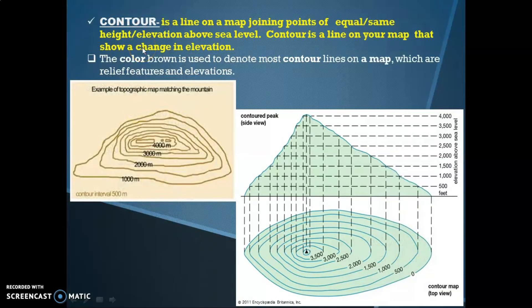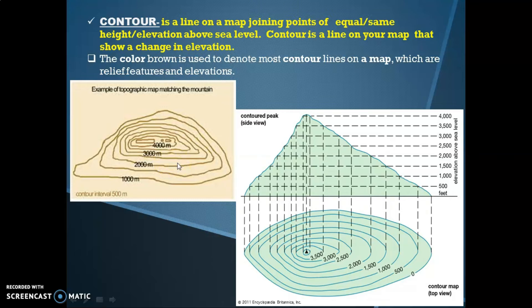Now I will discuss contour lines. A contour is an imaginary line on a map joining points of equal or the same height or elevation above sea level. Contour lines on your map show a change in elevation. The color brown is used to denote most contour lines on a map, which represent terrain features and elevation. As you can see in the picture, each line joins points of equal elevation — for example, all points marked 0 or all points marked 500 are connected.